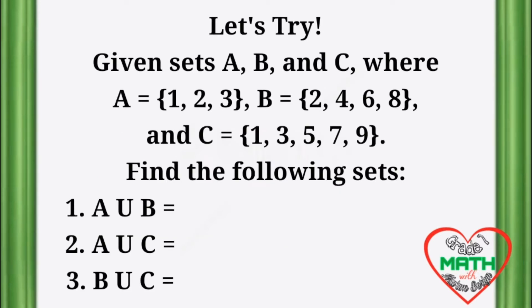Let's try! Given sets A, B, and C where A is equal to {1, 2, 3}, B equals {2, 4, 6, 8}, and C equals {1, 3, 5, 7, 9}. Find the following sets. I will give you 10 seconds to answer.